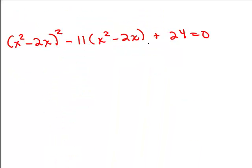So here's the problem, and notice in parentheses I have x²-2x, and over here I have it again but it's squared, so it's natural that it looks sort of like u²-11u+24=0. So that's exactly what we're going to do.